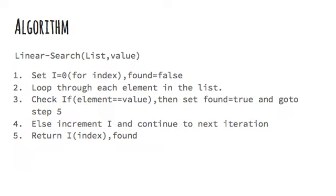First we take variable i as the index of the list and found variable which will store true when the element is found else the default value of found is false. Now we iterate to the list scanning each element comparing it to the value that we pass in the method. Then if the element and value are equal then found is set to true and we exit the loop and return the index which is i and the value of found. Otherwise we increment i and continue to the next iteration.